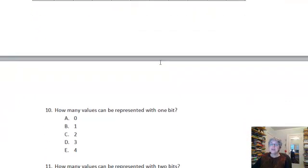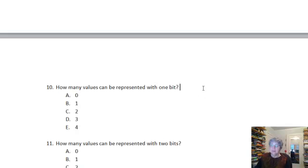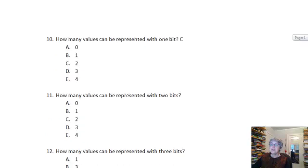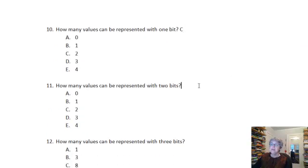So, how many values can be represented with 1 bit? It's 2, c. How many can be represented with 2 bits? Well, 2 squared is 4. It's 4, e.